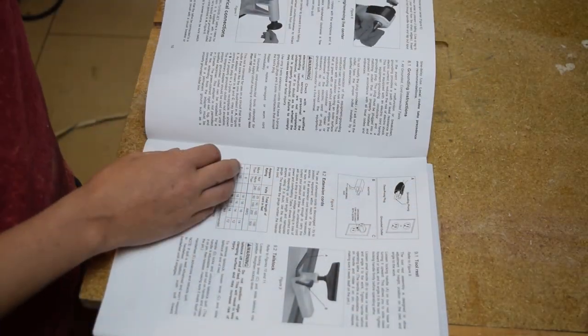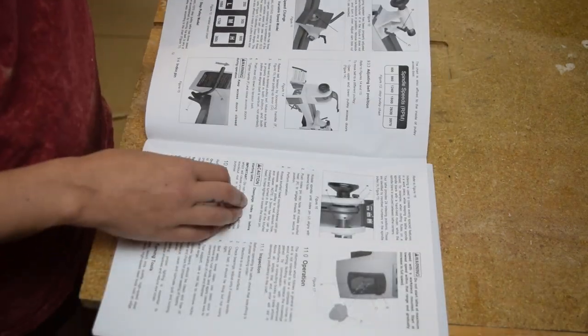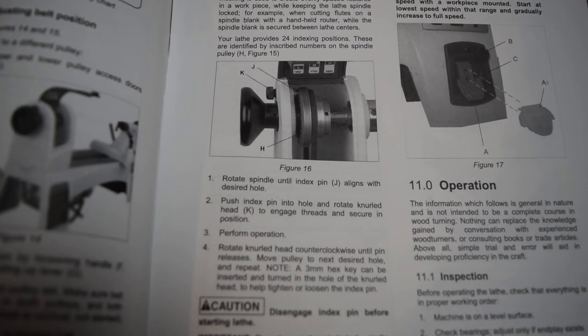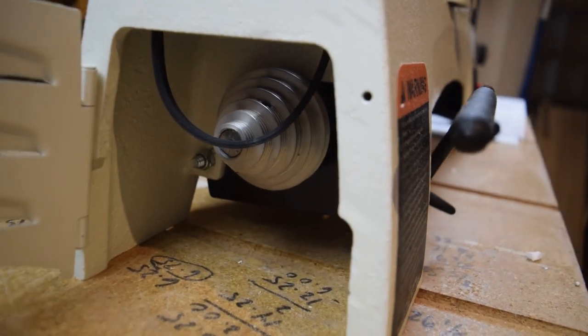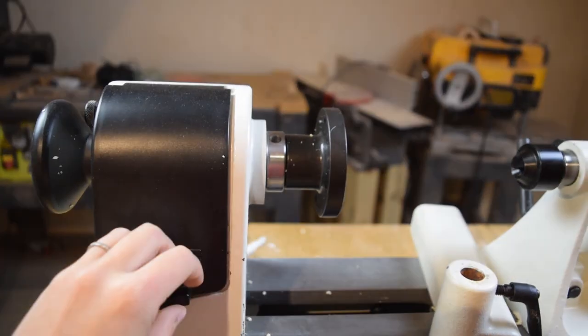Once all the parts were accounted for, the next step was to set up the spindle pulley. This lathe is a variable speed model, so to select the desired RPM, you have to place the pulley belt on the right tracks of the upper and lower pulleys.